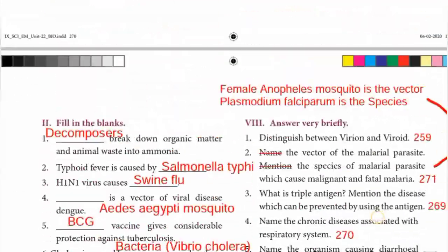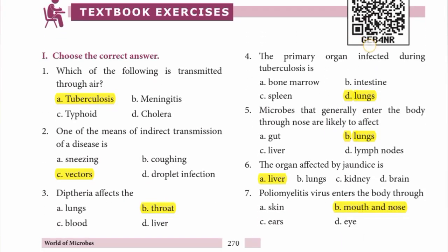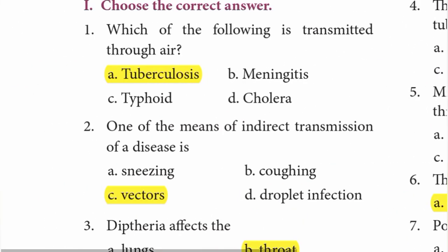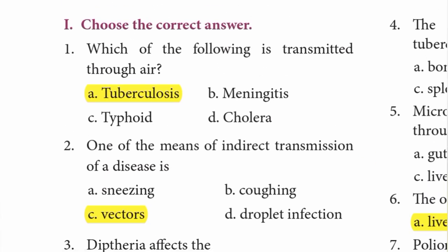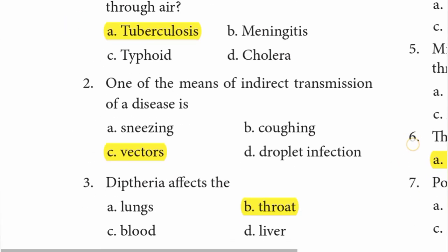Page number 270, Roman number one: Choose the correct answer. First one — which of the following is transmitted through air? The answer is option A: Tuberculosis.